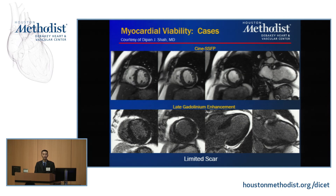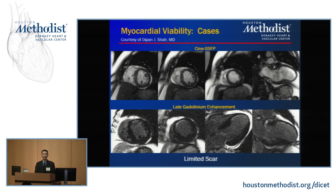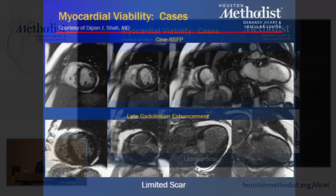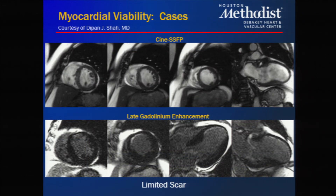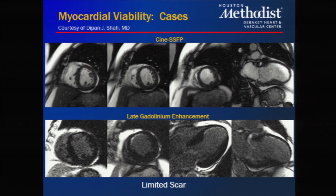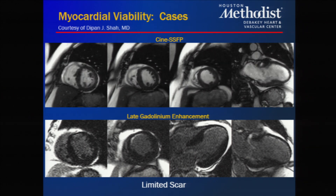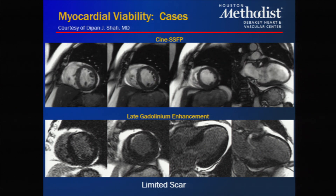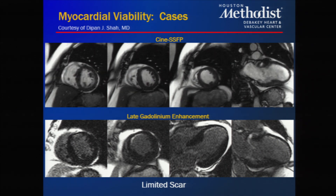Around the turn of the century, a group at Northwestern began publishing literature using what's called delayed gadolinium enhancement. Gadolinium is administered to the patient, images of the heart are taken, and then five to ten minutes later, delayed imaging is performed, which shows an area of white rim enhancement following a vascular territory. It was discovered that this correlates with myocardial infarction and scar tissue.